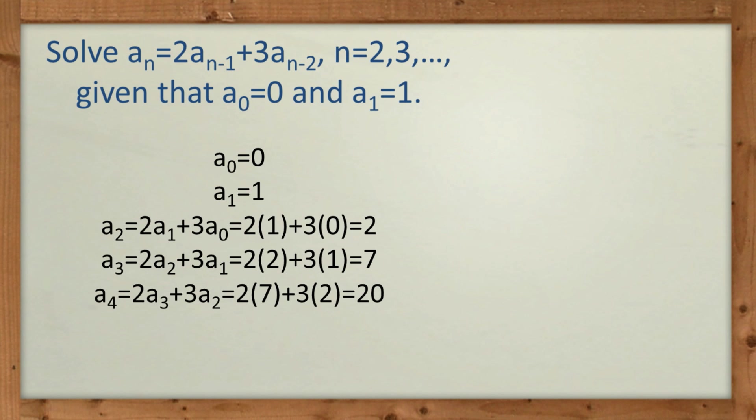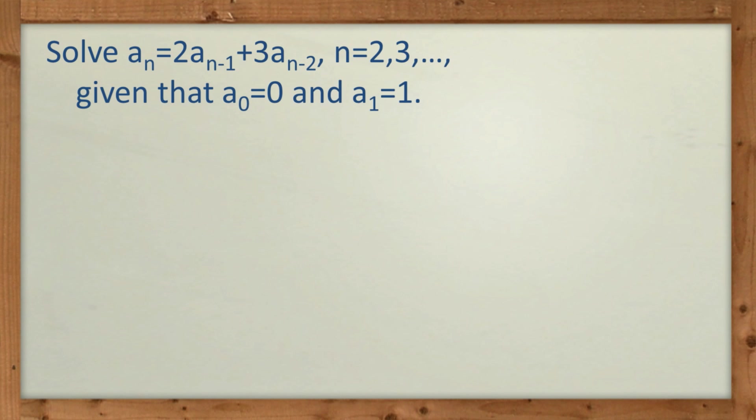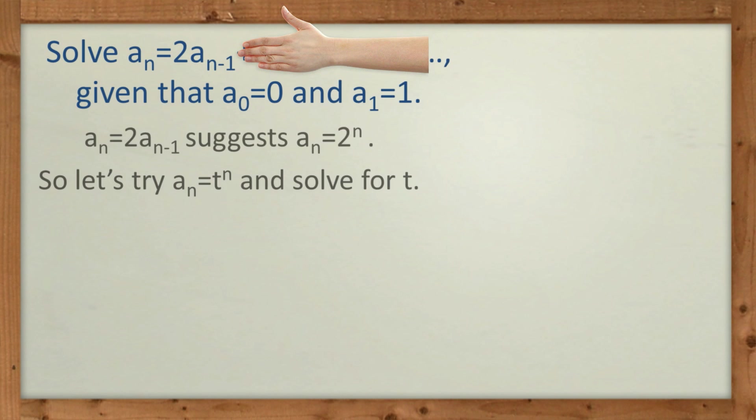So for this first question I'm just going to explain a little bit about how we might go about getting a solution. So if I just covered up some of the recurrence, so it just said A_n equals 2A_n-1, well that's really saying that at every step, every time we get a new A, we're just doubling it. So that would suggest some formula like A_n equals 2 to the power of n. So it'd be really great if we could just find what the answers were, you know, something to the power of n. So that's what we're going to try. We're going to put A_n equals t to the n and we'll solve for t.